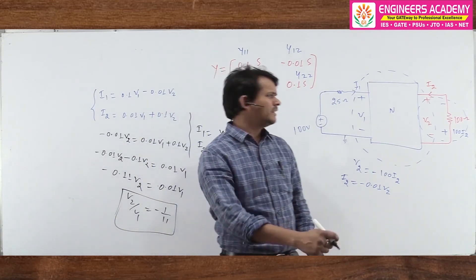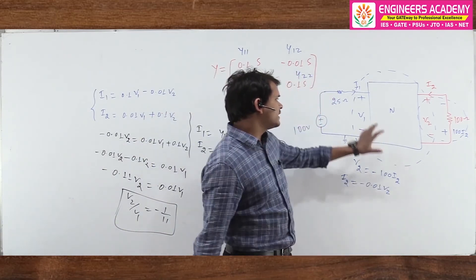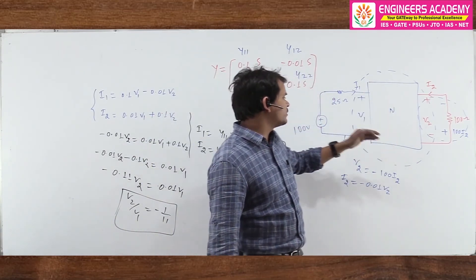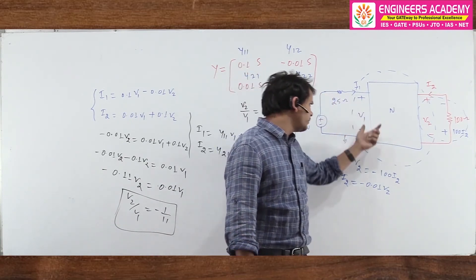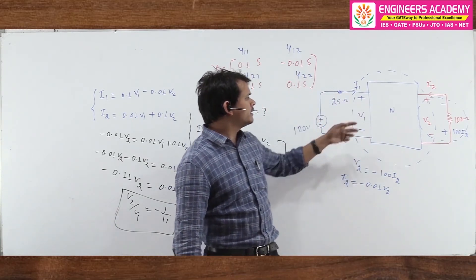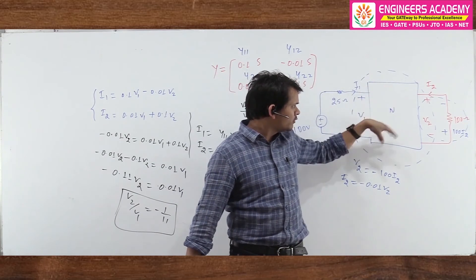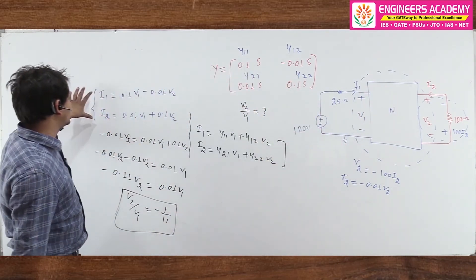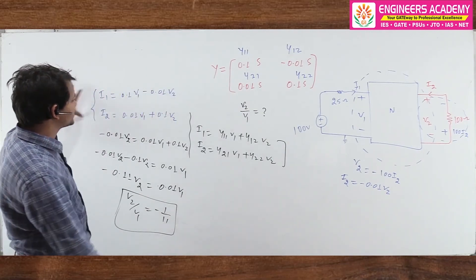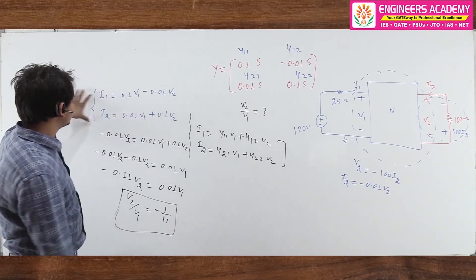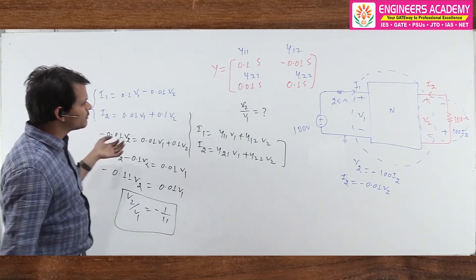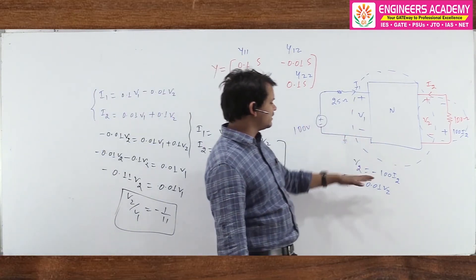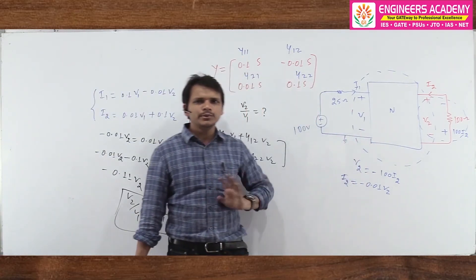Just like I have told you, whether you are given ABCD parameter or Z parameter or Y parameter, always I replace this circuit or this network with the help of these two mathematical equations. In those mathematical equations we can replace it. Once I replace it, then we simply apply KVL, KCL and relate whatever I need. This approach is very basic.